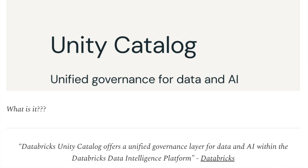What is Unity Catalog? Databricks' Unity Catalog offers a unified governance layer for data and AI within the Databricks Data Intelligence Platform. What it really comes down to is that Unity Catalog is governance — because it tracks everything and stores everything in a unified platform. Think of it as a catalog of many different things, heavily slanted toward governance because of permissions and other controls.